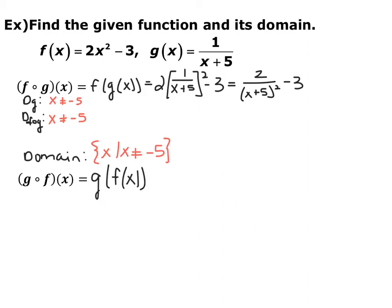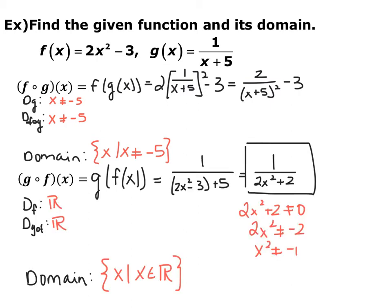Now pause the video and find g composed with f of x, so g of f of x. Instead of taking g of x and sticking it into f, you're going to take f of x and put it into g. So g of f of x — every time I saw an x in g of x, I replaced it with the entire function 2x squared minus 3. I got 1 over 2x squared minus 3 plus 5, which simplifies down to 1 over 2x squared plus 2. That's your g of f of x.